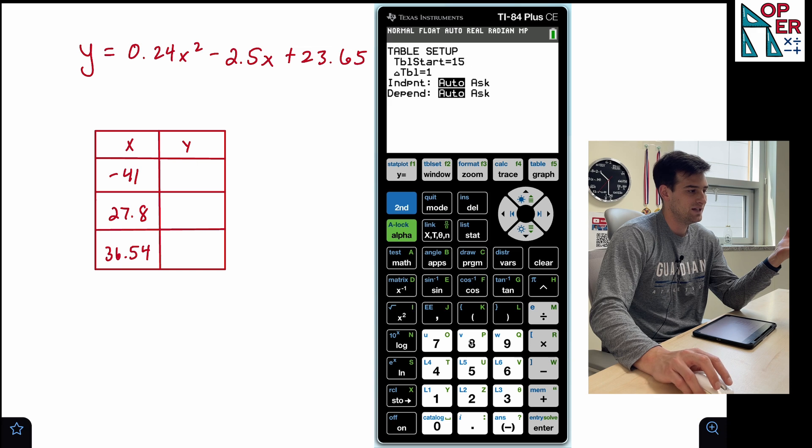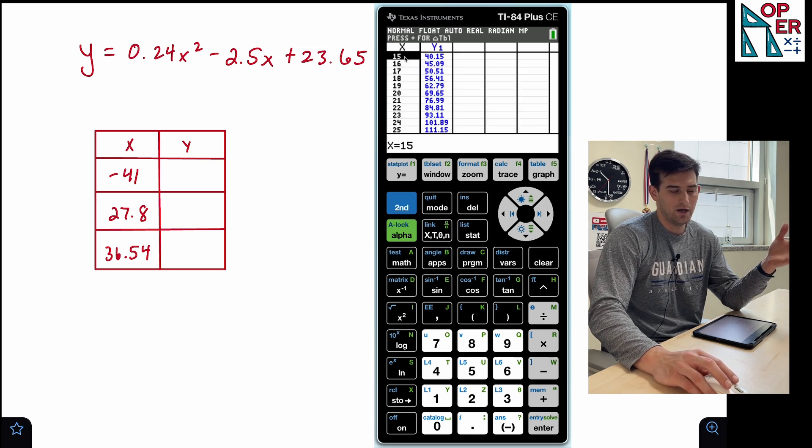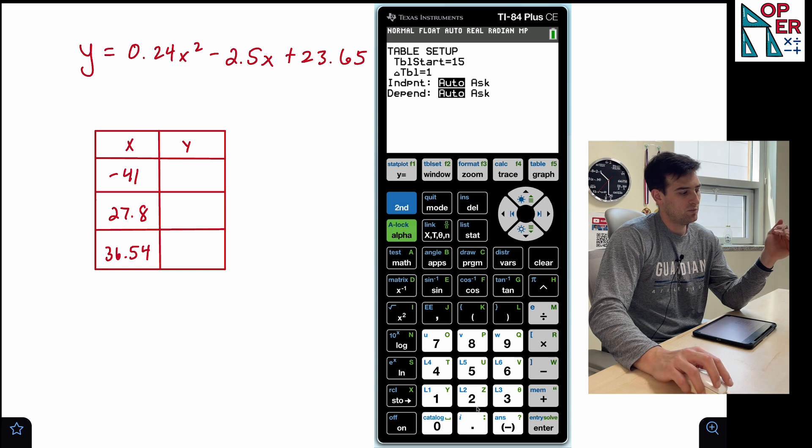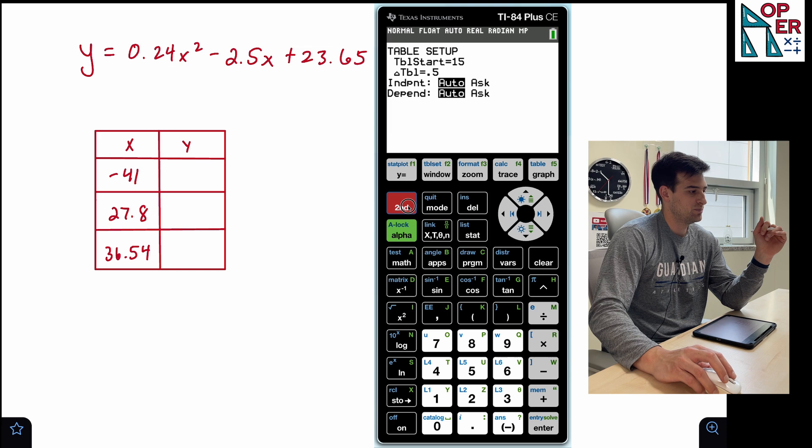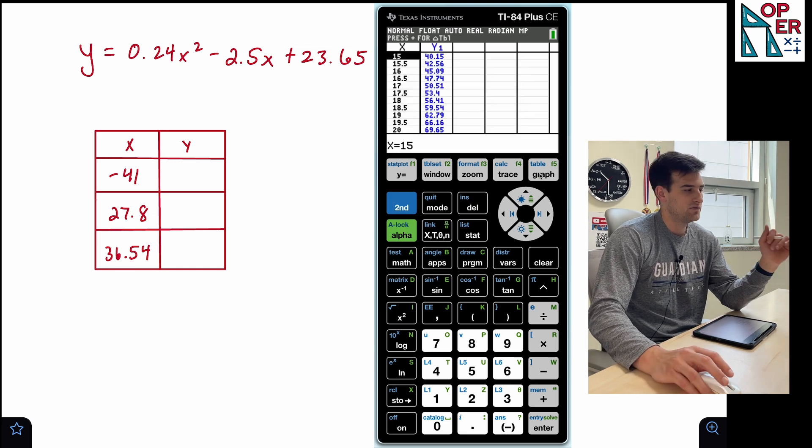So if I change this to 15 and I go back to my table, we'll now see my x value is at 15, right? So let's go back to table set. Now, if I wanna change the increments, I could change this. So right now I'm going by ones. If I wanna see every half value, I change that to 0.5. I go back to my table and notice we see 15, 15 and a half, so on and so forth.